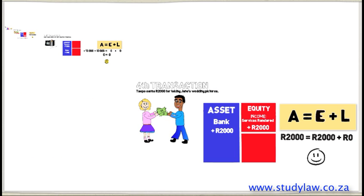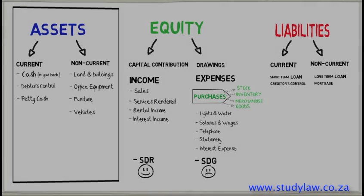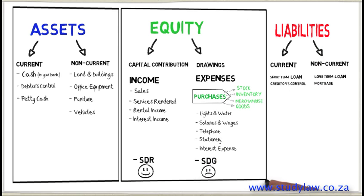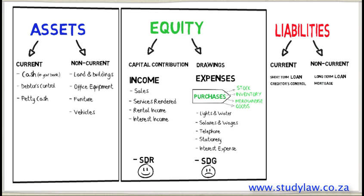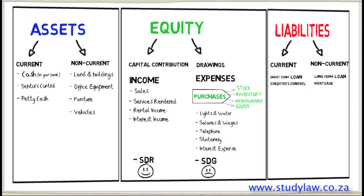We have come to the end of Chapter 1. It is important that you have learned to classify all accounts as either an asset, equity, or liability account. If you are confused at any point, I would suggest going back to the beginning and re-watching the video, as some of this information can be overwhelming to students who have never done accounting before. We will now be going on to Chapter 2, where we will look at the accounting equation in more detail as it is asked in the exam.